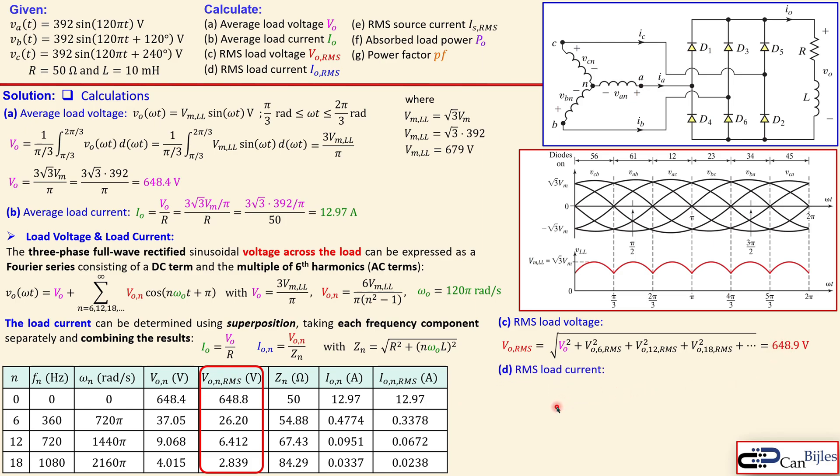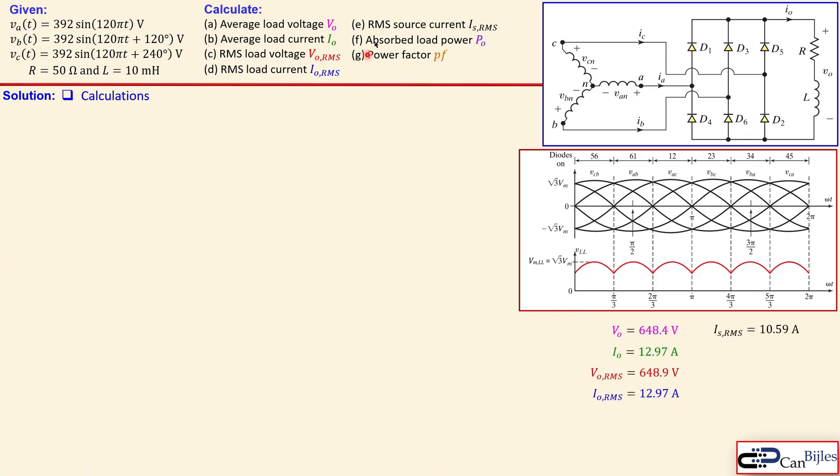The RMS load current can be then calculated using the column here so given in this part that is again using the similar formula average part the sixth harmonic 12th harmonic 18th harmonic so you add them up you actually get almost the exact same as this one so because these parts are not really contributing that much so the result will be here 12.97. The RMS source current is again calculated using this formula we have seen it also in the previous example and that will give you 10.59 amps. Okay now we have now the most of the parts here so only part left is the absorbed power and the power factor.